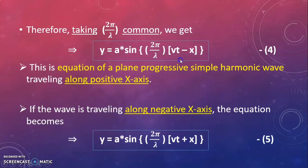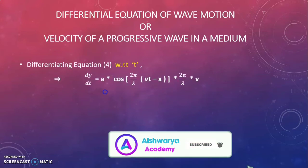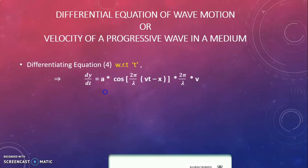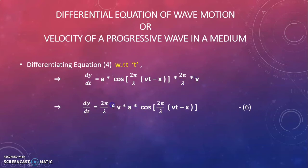Differentiating equation 4 with respect to t, we get dy/dt = a cos((2π/λ)(vt − x)) × (2π/λ) × v.